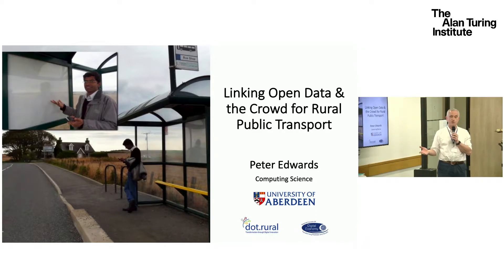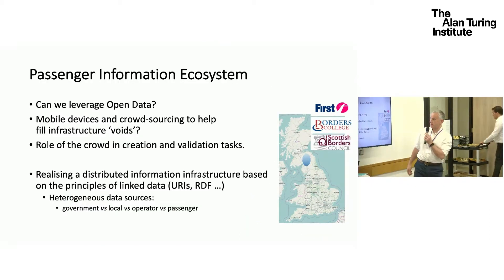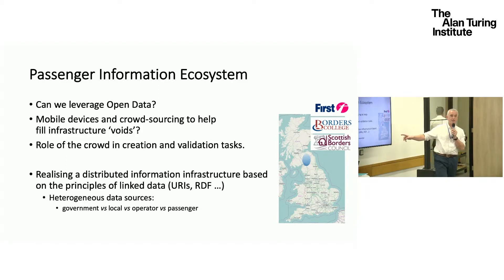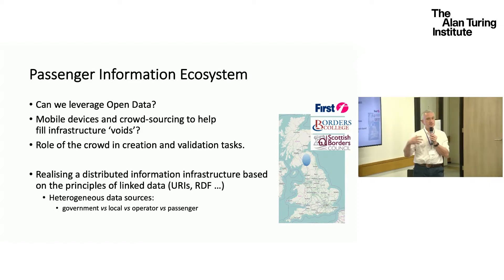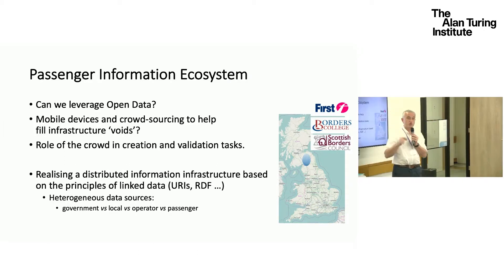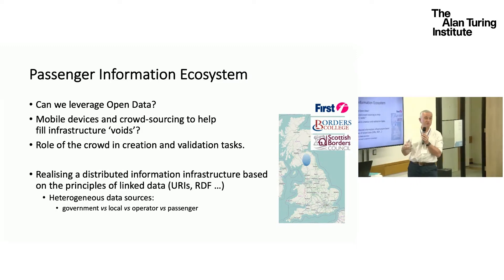What we were interested in with First Bus was: could we take all of the data sets that were supposedly available and architect a solution that would help people with mobility in rural areas? We worked with a particular community in the Scottish Borders because First Bus were particularly interested in that area and in working with Scottish Borders Council and Borders College. The ambition of the project was: can we leverage the power of open data to deliver mobility information to people in those areas? Crucially, we also wanted to use mobile devices to allow people in rural areas to provide information and help fill in information voids.